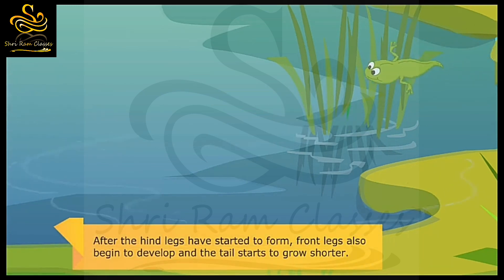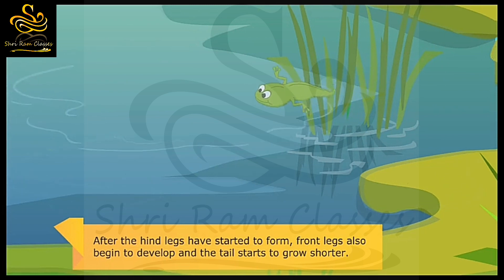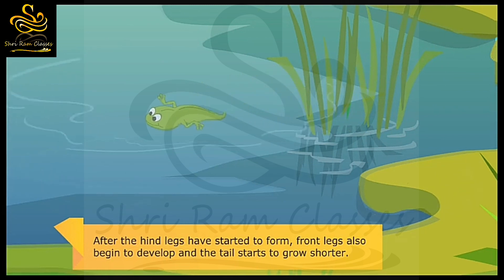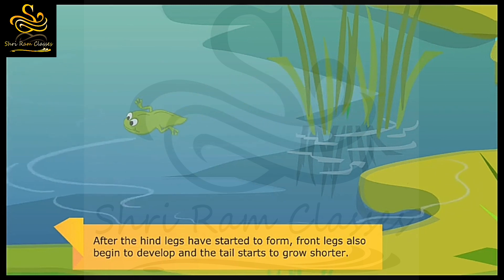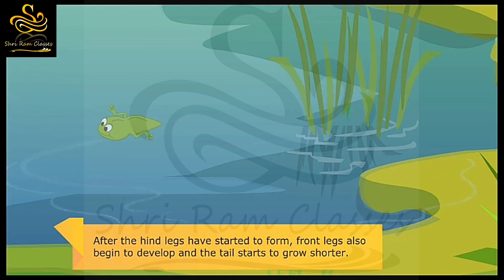After the hind legs have started to form, front legs also begin to develop and the tail starts to grow shorter.